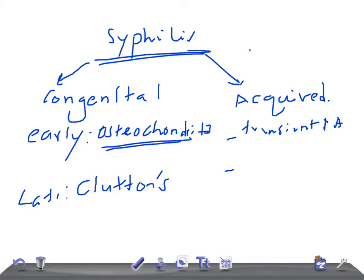In tertiary stage, gummatous arthritis occurs where the large joints are often involved.